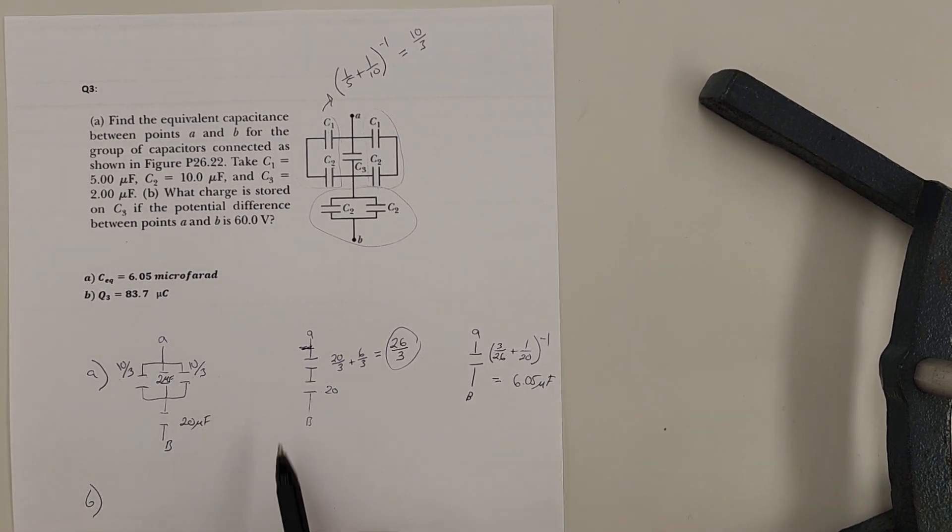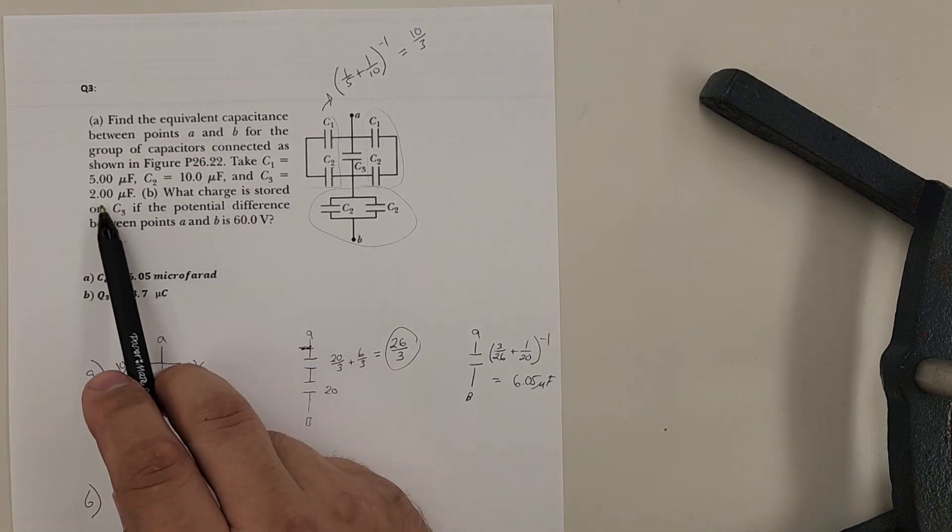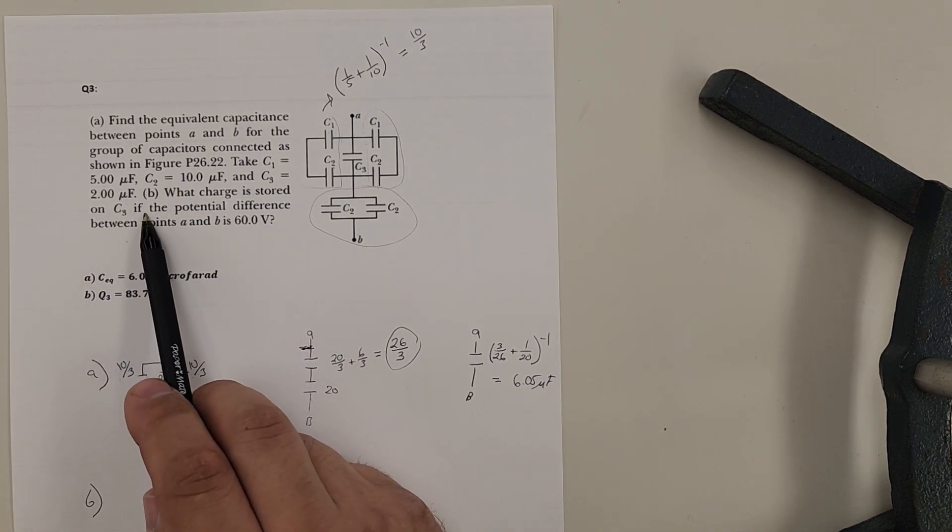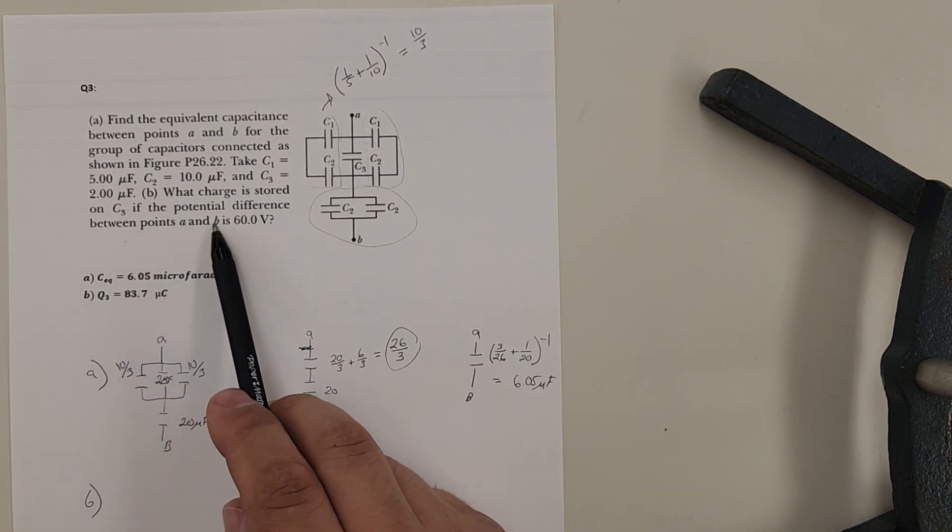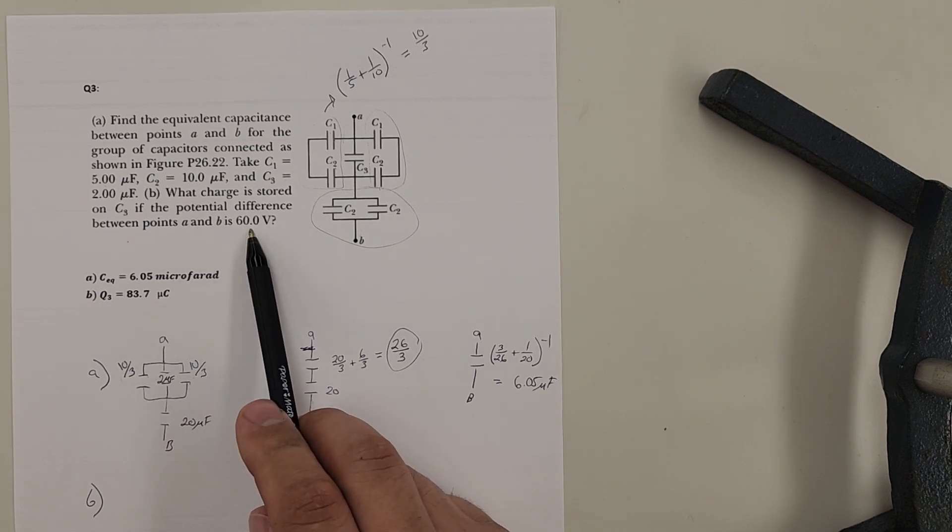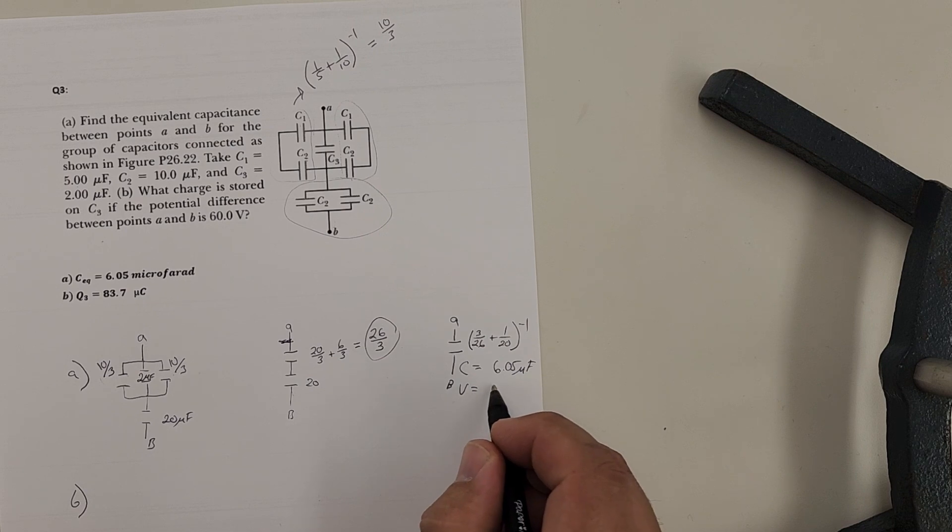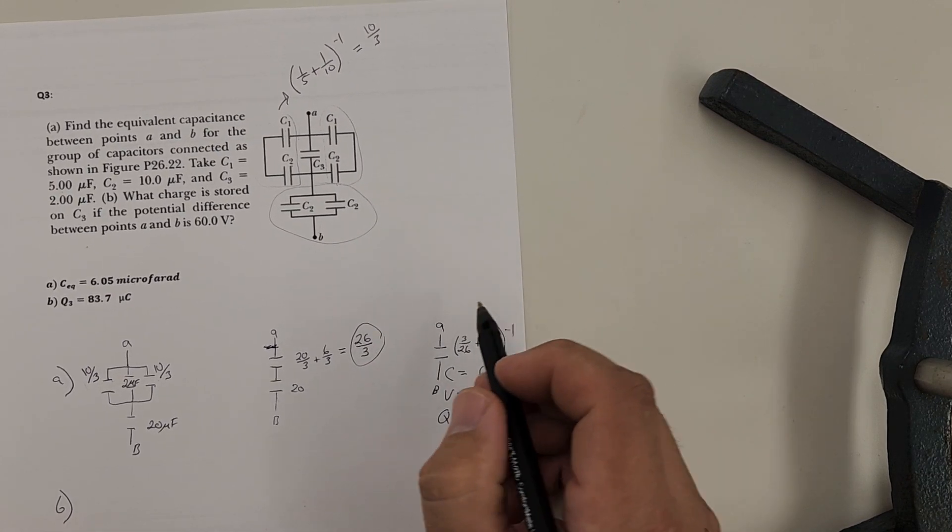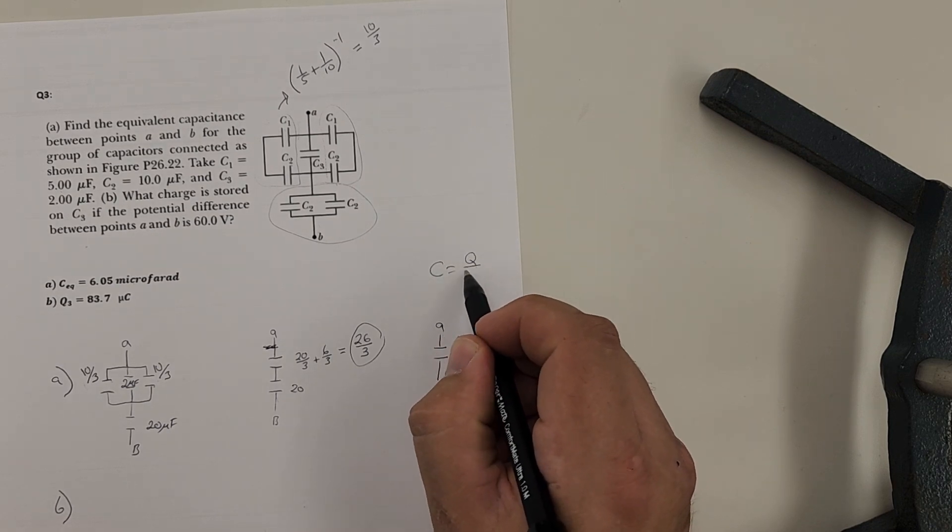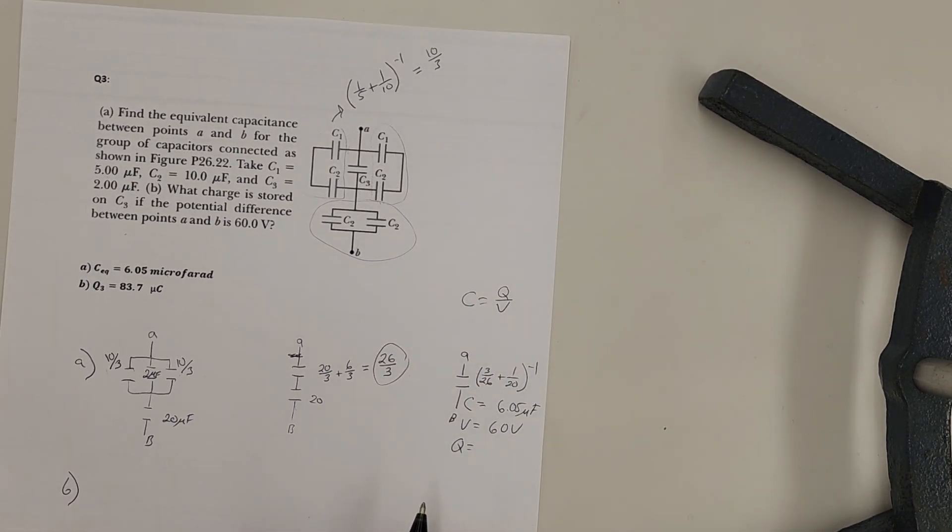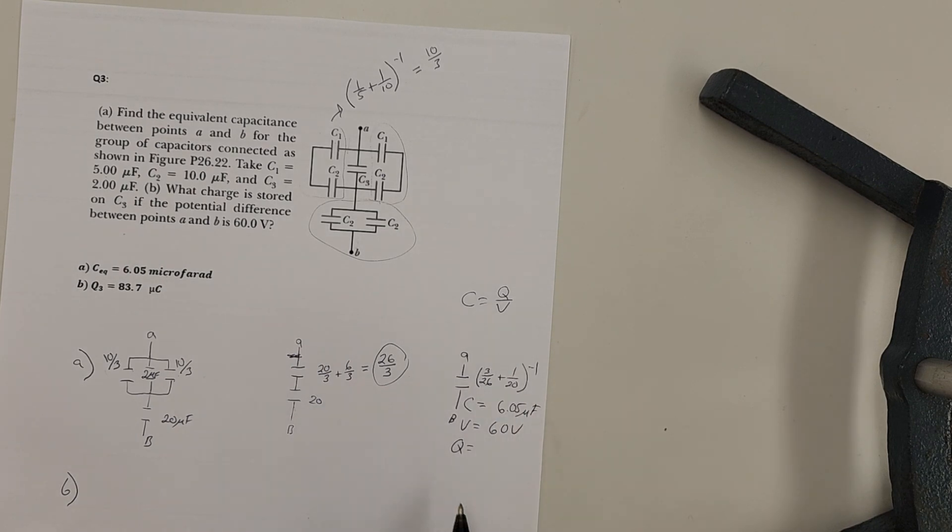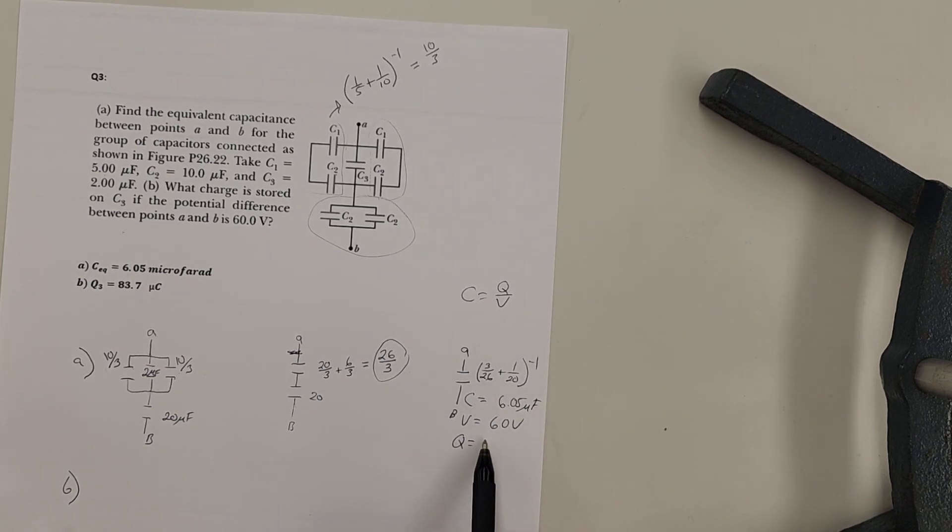Part B of this says what charge is stored on C3 if the potential difference between points A and B is 60 volts. Okay. So now I know this was the capacitance. I now know this is 60 volts. And what I don't know is Q. Okay. So we can take our C, C is equal to Q over V. And we can solve for Q.